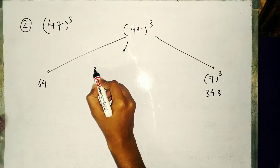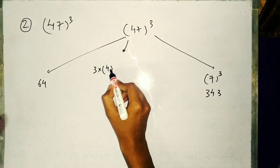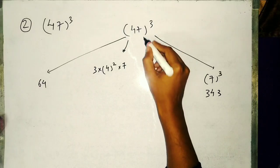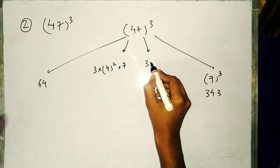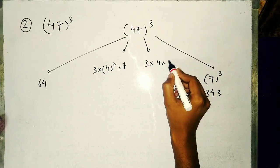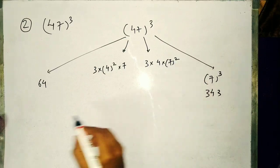47 cube means 4 cube which is 64 and 7 cube which will be 343. Similarly, second step: 3 into first digit square means 4 square into second digit 7, 3 into first digit into second digit square which is 7 square.